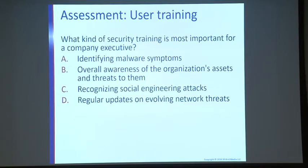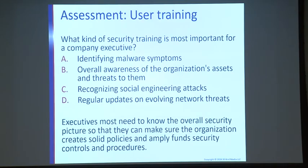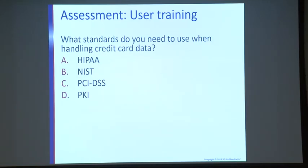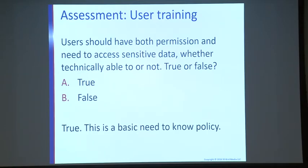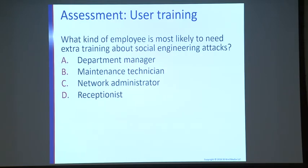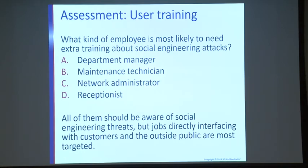Review questions: What kind of security training is most important for a company executive? They need to know the overall security picture so they can ensure the organization creates solid policies and amply funds security controls — the overall awareness answer. What standards apply when handling credit card data? PCI DSS. Users should have both permissions and need-to-know to access sensitive data. What kind of employee most needs extra training about social engineering attacks? The receptionist — anyone facing the public should have that training.